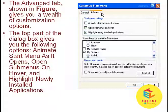The top part of the dialog box gives you the following options: Animate Start menu as it opens, submenus on hover, and Highlight newly installed applications.